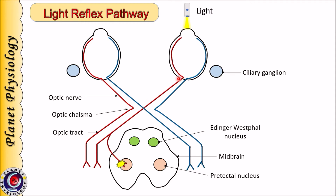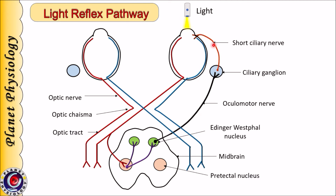These two blue circles represent ciliary ganglia. When light is shown to the eye, signals are generated by the retina. These signals travel in the optic nerve, then optic chiasma, and optic tract. The fibres carrying signals for light reflex leave the optic tract and synapse in the pre-tectal nucleus of the midbrain. Fibres arising from the pre-tectal nucleus relay this signal to the ipsilateral as well as contralateral Edinger-Westphal nucleus. From the Edinger-Westphal nucleus, impulses travel in the oculomotor nerve, which terminate in the ciliary ganglion.